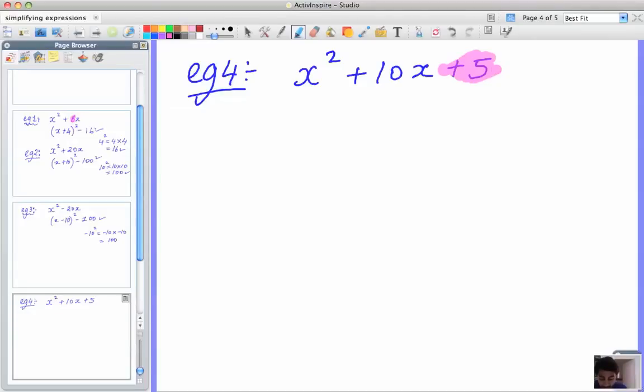So, again, we're going to put a bracket. We're going to put a square. We're going to put a minus. We're going to put the x here. And then, I'm going to take the plus 10. I'm going to take the plus 10 here. And I'm going to divide that by 2. So, that gives me plus 5. Next, I'm going to do 5 squared.